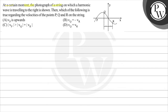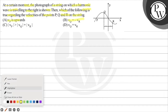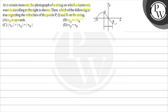The photograph of a string on which a harmonic wave is traveling to the right is shown. Which of the following is true regarding the velocities of points P, Q, and R on the string? Options include: vP is upward, vQ is equal to minus vR, and several more options.